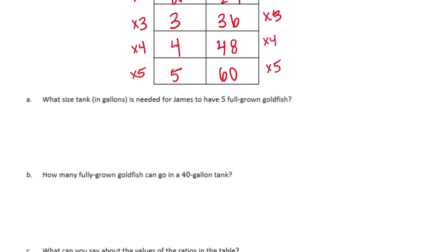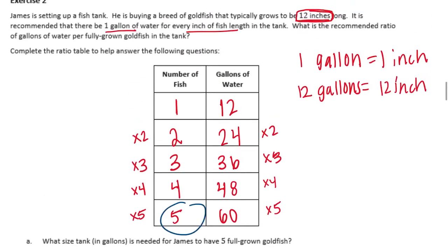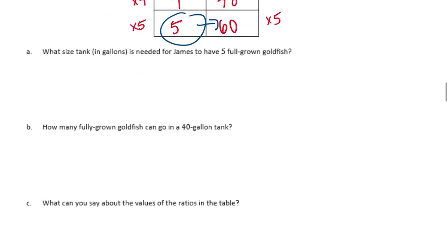So what size tank in gallons is needed for James to have 5 full grown adult goldfish? So he wants 5 goldfish which means he is going to need 60 gallons of water. So he needs a 60 gallon tank for 5 fish.